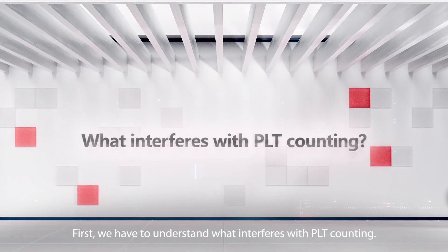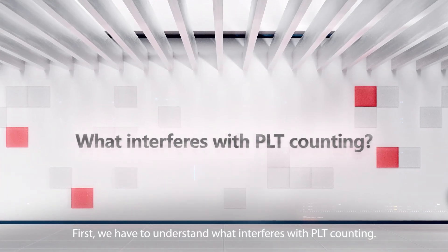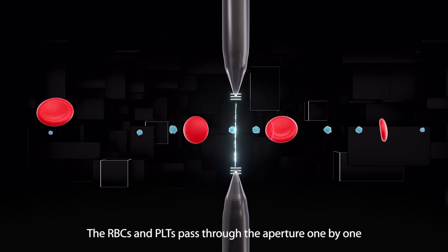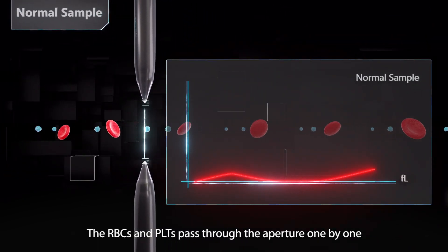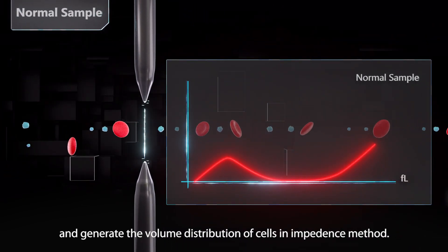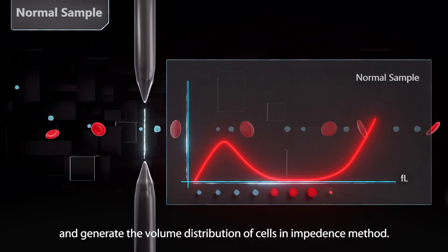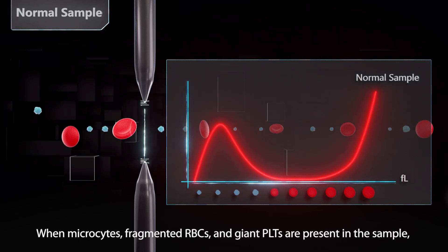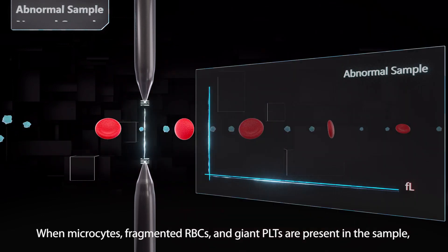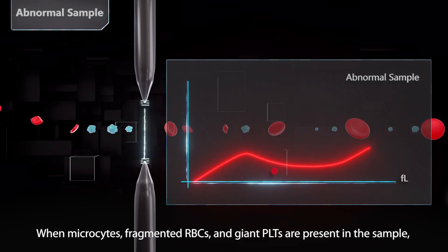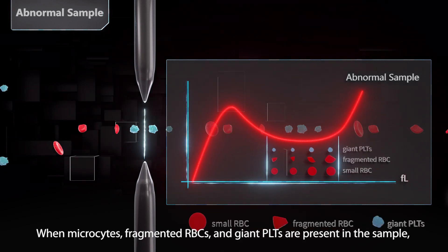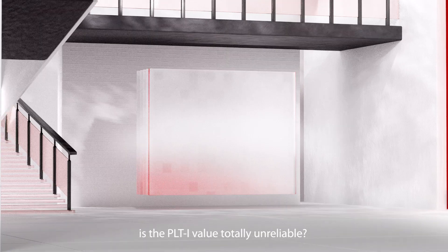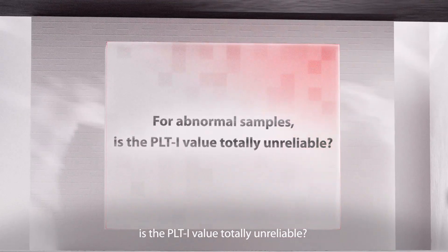First, we have to understand what interferes with PLT counting. The RBCs and PLTs pass through the aperture one by one and generate the volume distribution of cells in the impedance method. When microsites, fragmented RBCs, and giant PLTs are present in the sample, is the PLTi value totally unreliable?